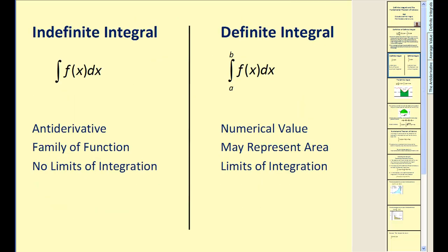Let's look at the differences between an indefinite integral and a definite integral. They look identical except the definite integral has limits of integration, the values A and B. An indefinite integral returns an antiderivative — a function whose derivative equals F of X — and returns a family of functions, so there is a plus C on the end with no limits of integration. When we evaluate a definite integral, we get a numerical value, which may or may not represent area depending on whether the function is non-negative and continuous.